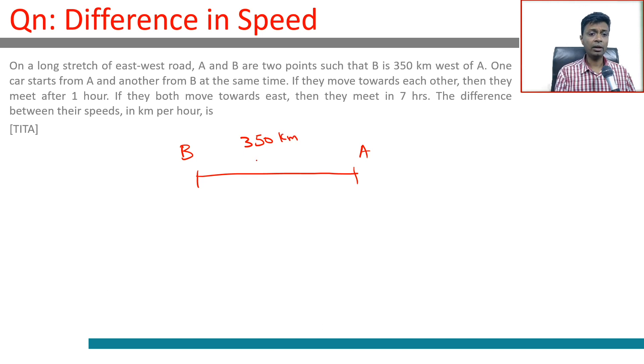One car starts from A and another from B at the same time. If they move towards each other, then they meet after one hour. B, let's say, travels at B kilometers per hour. A travels at A kilometers per hour. They meet in one hour.